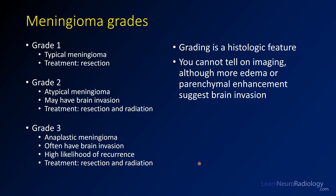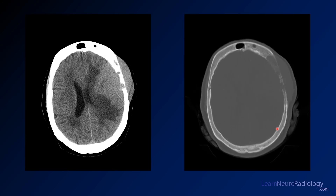Grades of meningiomas are one to three — there is no grade four meningioma. The most common is grade one, which are typical meningiomas treated with resection alone. Grade two and grade three meningiomas are resected and irradiated afterwards; they are more likely to have brain invasion and have a higher likelihood of recurrence as grade increases. Grading is a histologic feature — you can't really tell on imaging, though more edema, more parenchymal enhancement suggesting brain invasion, and rapid doubling time can suggest a higher grade meningioma.